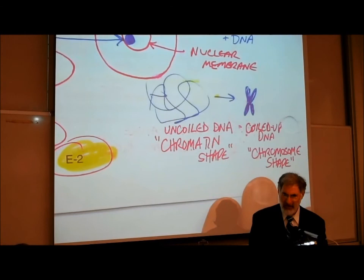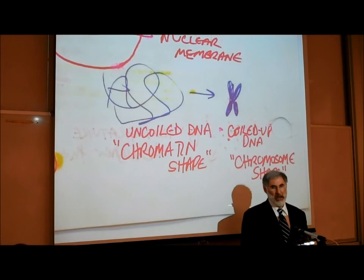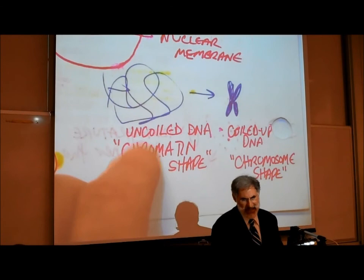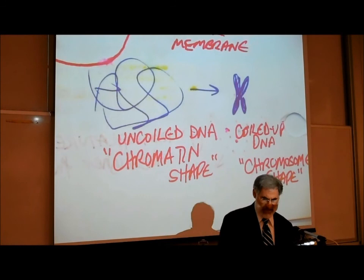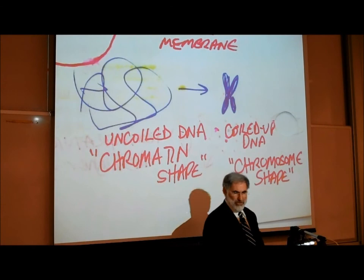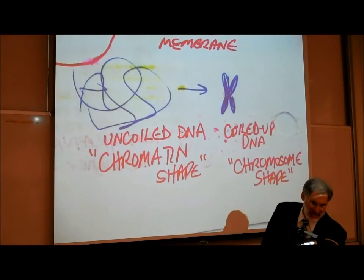The DNA molecule, or chromatid, can coil up or uncoil. When the DNA is uncoiled — kind of looking like a wet spaghetti noodle — it's said to have a chromatin shape. When the DNA coils up tightly, we say it has a chromosome shape. These terms, chromatin and chromosome, describe whether the DNA molecule is uncoiled or tightly coiled.